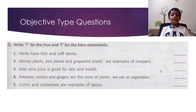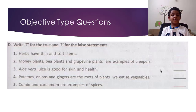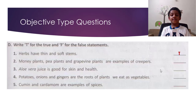D. Write E for true and F for false statements. Question 1: Herbs have thin and soft stems — the answer is true. Money plants, pea plants and grapevine plants are examples of creepers — the answer is false. Aloe vera juice is good for skin and health — the answer is true.